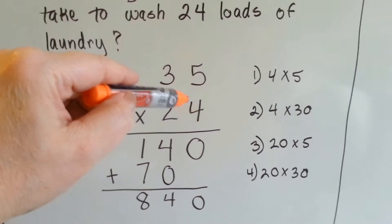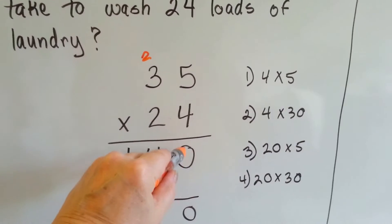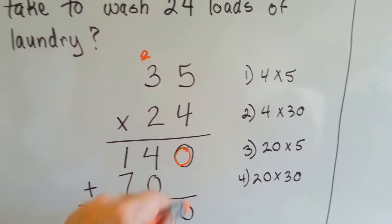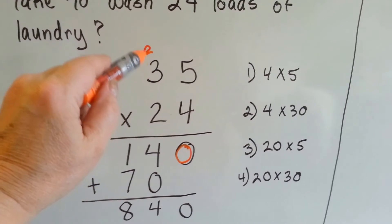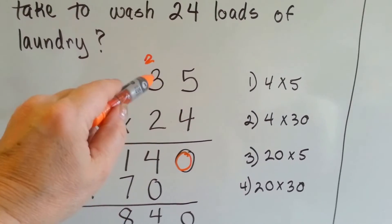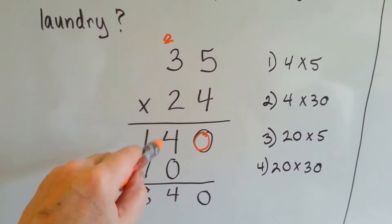4 times 5 is 20. We carry the 2 and put the 0 down, right here, see? Now we do 4 times 3 is 12, and we add the 2. 12, 13, 14. And we put the 14 here.